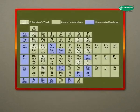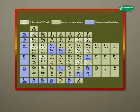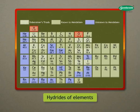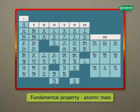Mendeleev examined the relationship between the atomic masses of the elements and their physical and chemical properties. Among chemical properties, he concentrated on the compounds formed by elements with oxygen and hydrogen, as they were very reactive and formed compounds with most elements. By analysing these compounds, Mendeleev believed that atomic mass of elements was the most fundamental property in classifying elements.